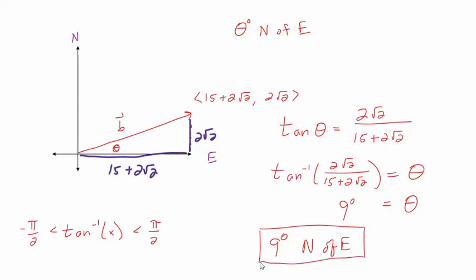So the heading is 9 degrees north of east. The boat would turn the wheel and head 9 degrees north of east, so that when the current pushes it southwest, the boat actually ends up going directly east. The result would be 15 miles per hour as observed from the shore, even though the boat is producing 18 miles per hour relative to the water. That's a little application of adding vectors.